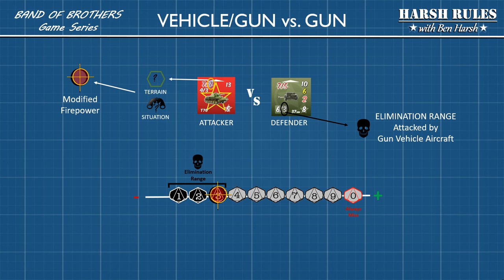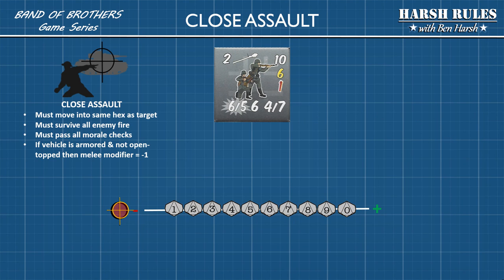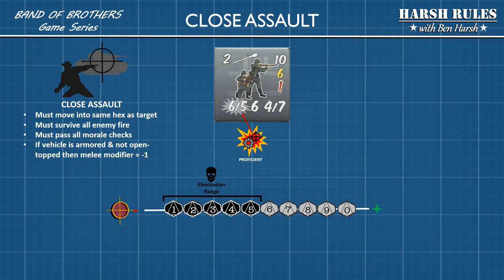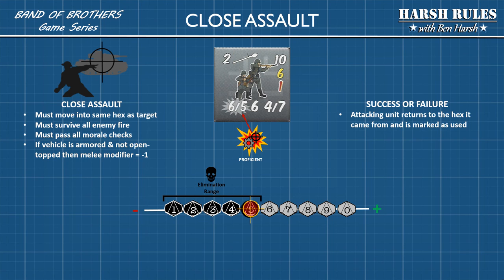Now let's look at vehicles and guns versus other guns — first, determine your modified firepower, which is the number after the slash; in this case a 7. A close assault represents infantry attacking a vehicle using mines, grenades, bundles, etc. To conduct a close assault, your attacking unit must move into the same hex as the target, survive all enemy fire, and pass all morale checks. If successful, you take the proficiency firepower number — the number after the slash — and if you roll a dice equal to or less than this, the vehicle is destroyed. If the vehicle is armored and not open top, there's a melee modifier of negative 1. Whether the attack succeeds or fails, the attacking unit returns to the hex it came from and is marked as used.